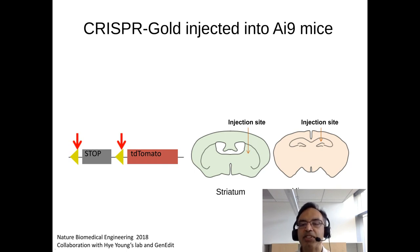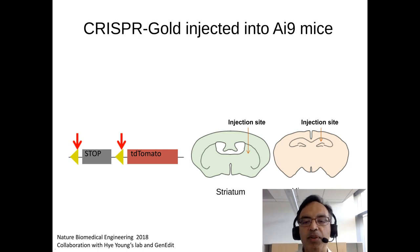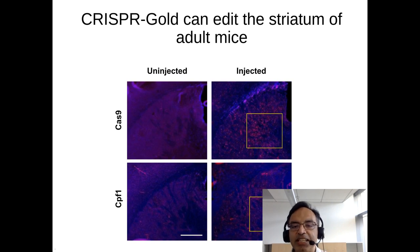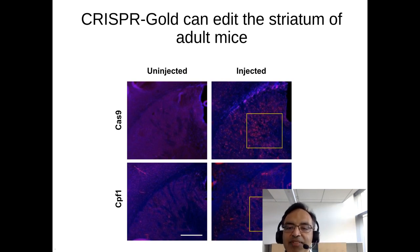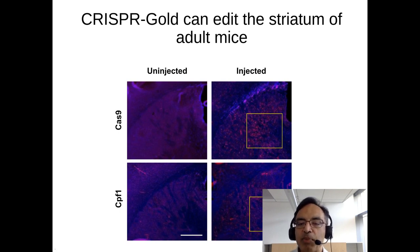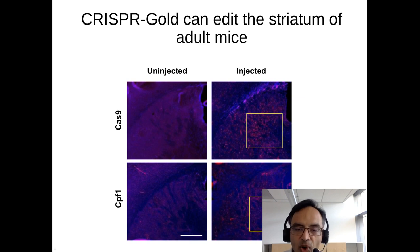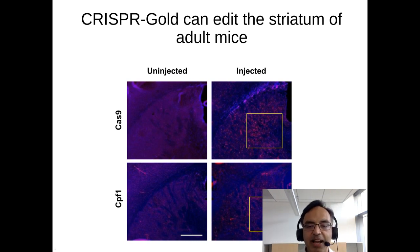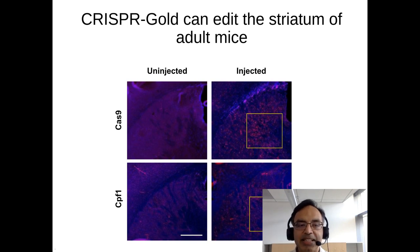We made CRISPR-GOLD designed to cut out the stop codon and shipped it to Hay-Young's lab. She injected it into the striatum and hippocampus using two flavors: one with Cas9 and one with CPF1. The results show that mice injected with Cas9 or CPF1 have many red dots — each representing a cell that received two cuts and re-expressed TD tomato — compared to nearly zero in the control. We were able to get around 10 to 15% editing efficiency, which is reasonably efficient given that this edit requires two cuts plus recombination.